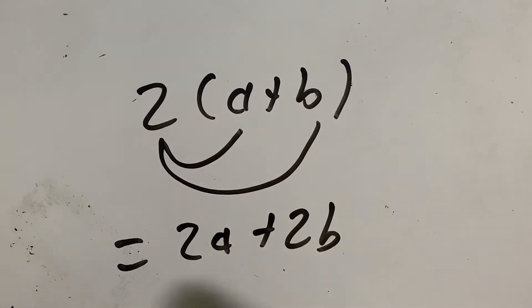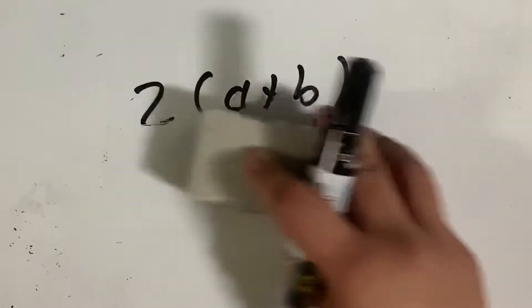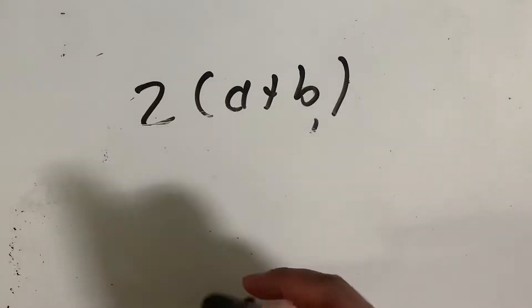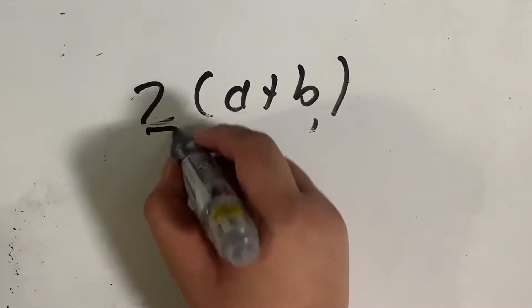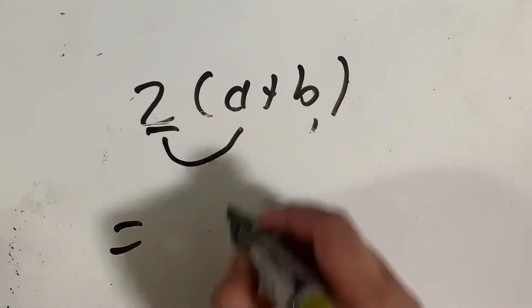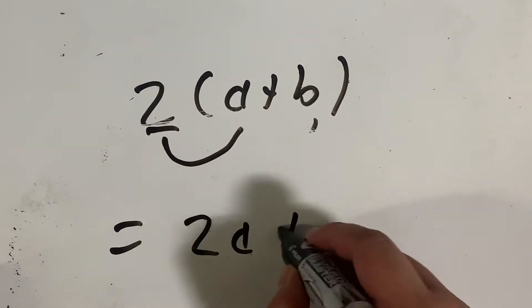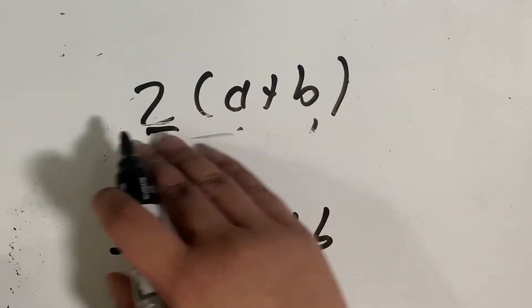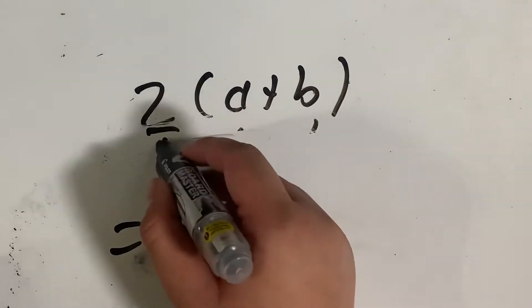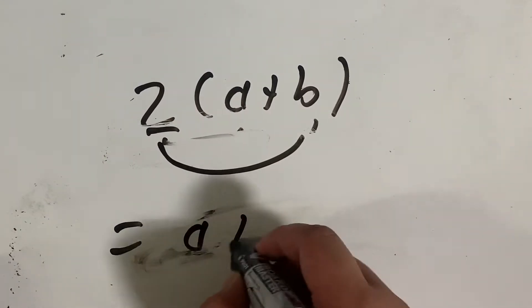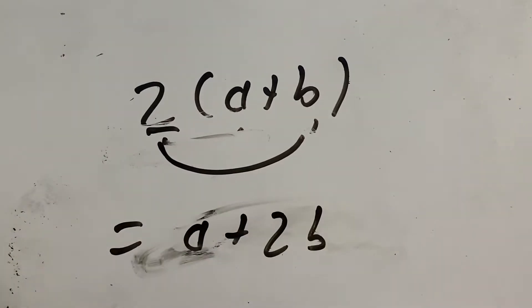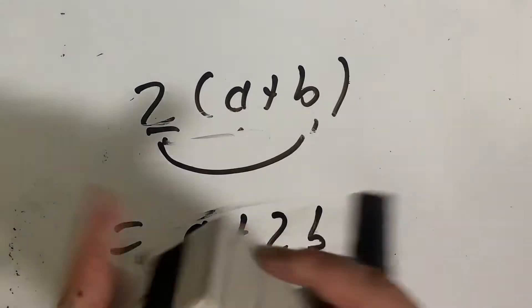Now, how do we know this is true? How can we prove that this is true? Because why can't a different thing happen? Why can't 2 just multiply by a and we get 2a plus b? Or maybe 2 can multiply just by b, so it's now a plus 2b. I'm glad you asked. No, you didn't ask, but I asked. Now, I can prove it using some visuals.